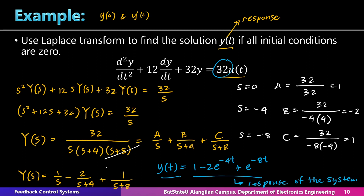The transient response consists of the two decaying exponential terms. The transient response decays with time until what remains is just the constant term, which represents the steady-state response. Therefore, the complete response of a system is the sum of the transient response and the steady-state response. Since the input is present only from t = 0 onwards, the output is also present only for positive values of t, which is why we multiply the output by u(t).